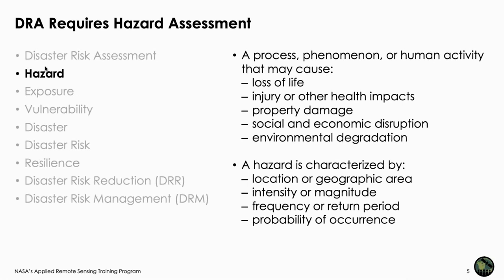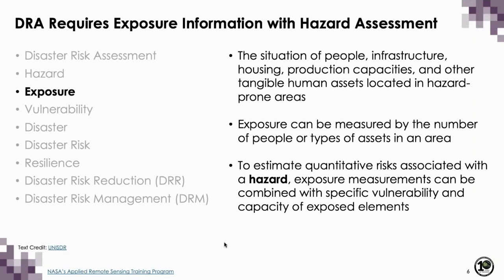Just to recap what we did last week — hazard is a phenomenon or event that could be natural or human induced. We are focusing on natural hazard, which causes loss of life, injury or other health impacts, property damage, social and economic disruption, and environmental degradation. Hazards are characterized by location or geographic area, intensity or magnitude, frequency or return period, and probability of occurrence. These are the parameters used to define or characterize hazard.